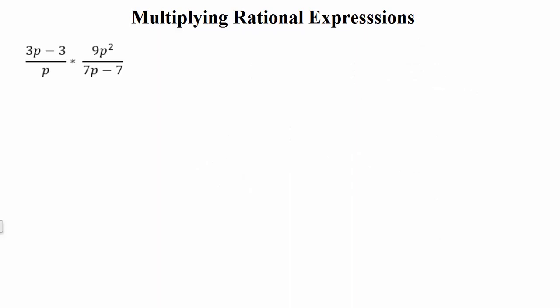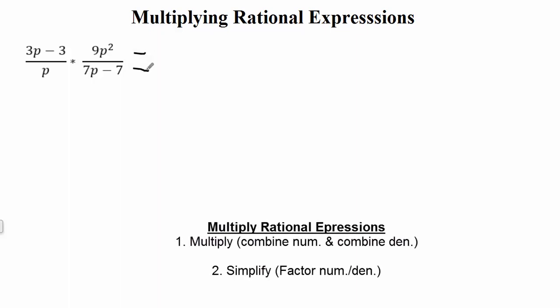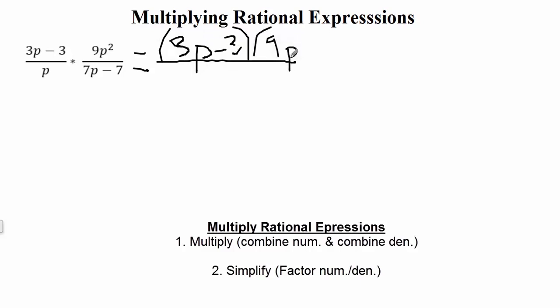Next example. Again, we have multiplying rational expressions, so let's multiply: top times top, bottom times bottom. That gives us (3p − 3)(9p²) over p(7p − 7). That's our multiplying step, which is really just a combining step. Now we need to simplify.